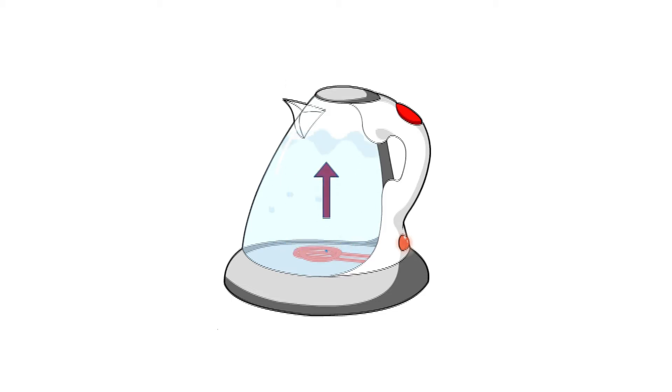The water gets a bit hotter each time it circulates. Eventually, all the water in the kettle reaches boiling point and it is ready to make a cup of tea.